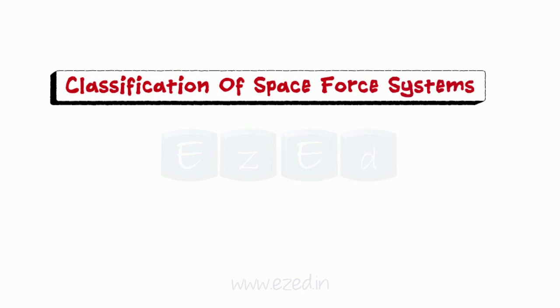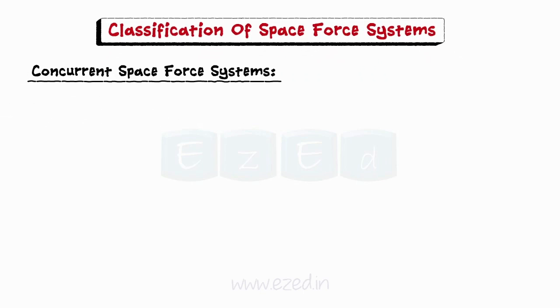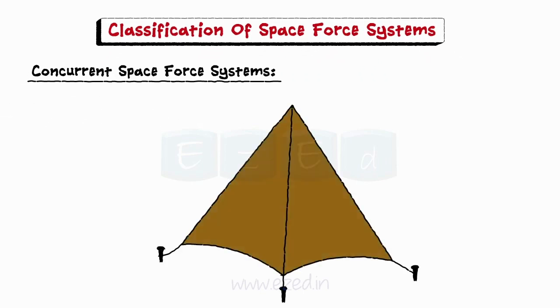Space force systems can be classified as follows. In a concurrent space force system, all forces meet at one point, but their lines of action do not lie on the same plane.